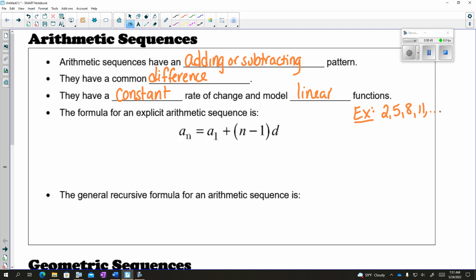The formula for an explicit arithmetic sequence is given to you here, and this is on the reference sheet, so you do not need to memorize it. But you do need to know what each piece means. So a sub 1 is the first term, n is the term number, and d is that common difference that I mentioned before.